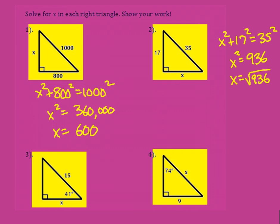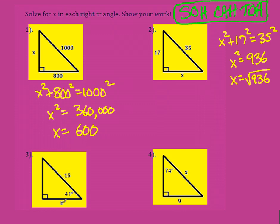For these ones down here we're going to use our good friend SOH-CAH-TOA. Based on our angle, here's the hypotenuse and we have the side next to it — the adjacent. Adjacent and hypotenuse is cosine. Cosine of 41 degrees equals adjacent, which is x, over the hypotenuse, which is 15. X is up high, so I multiply: 15 times cosine of 41 degrees gives me x equals 11.32.